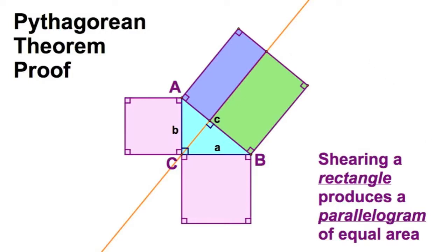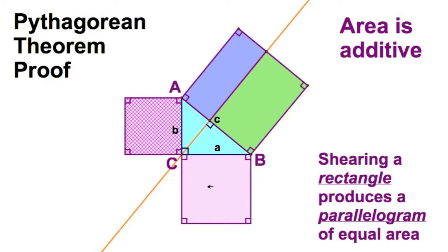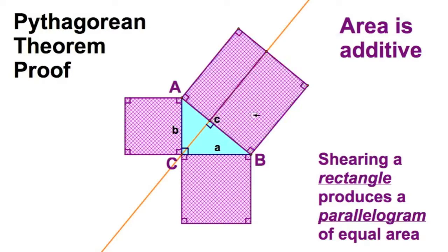Now, it just so happens that area is additive. That's something else we're going to learn back in chapter 11. And that means that this square plus this square—well, that has to equal this square, because it's equal to this rectangle and this rectangle. Area is additive, so there you go. A squared plus B squared equals C squared. There's your proof.